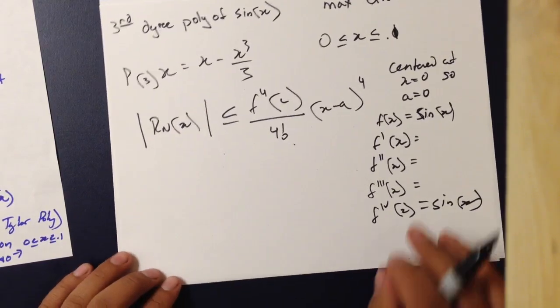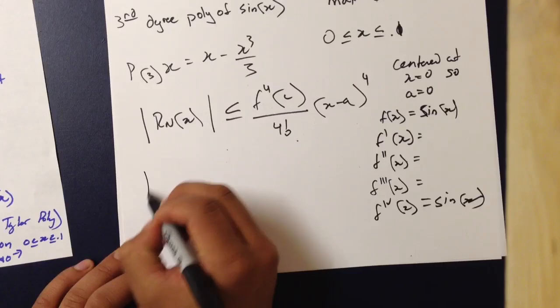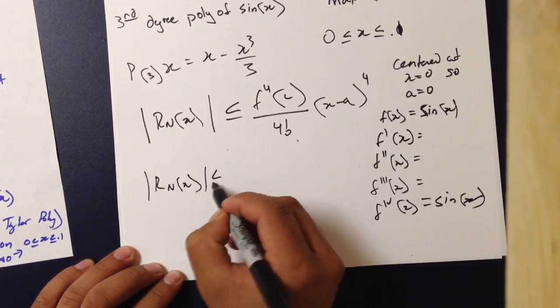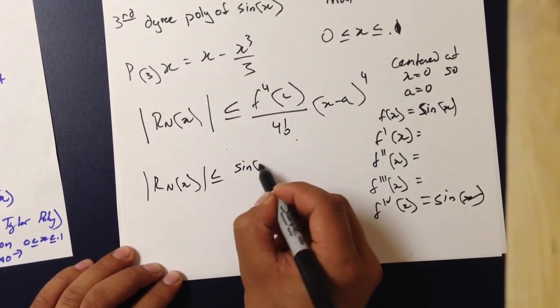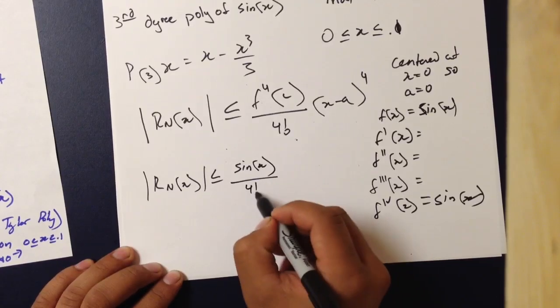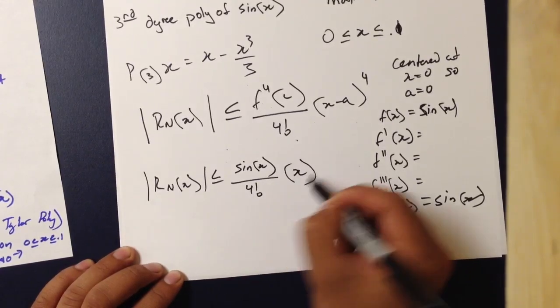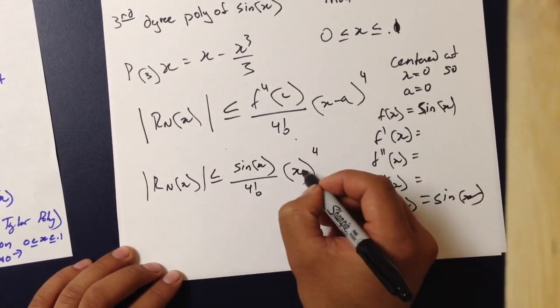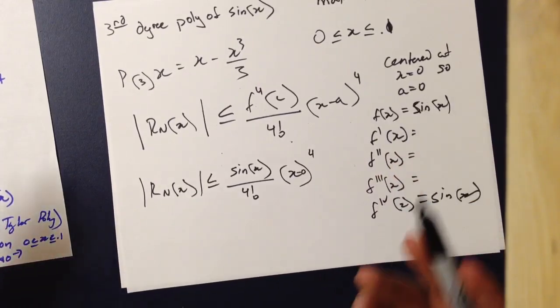So, now we can plug these values into the formula. The remainder is less than or equal to the sine of x, or 4 factorial times x to the fourth. Now, this is really an x minus 0, but it really doesn't matter.